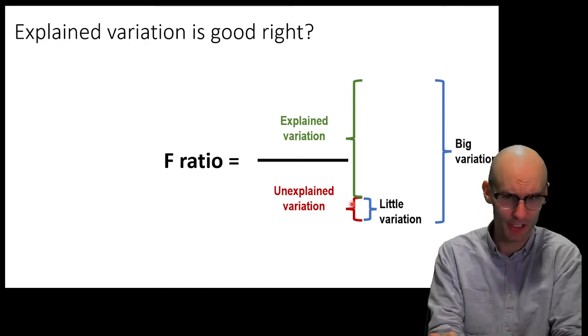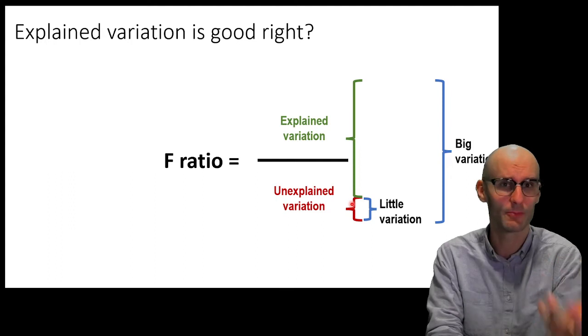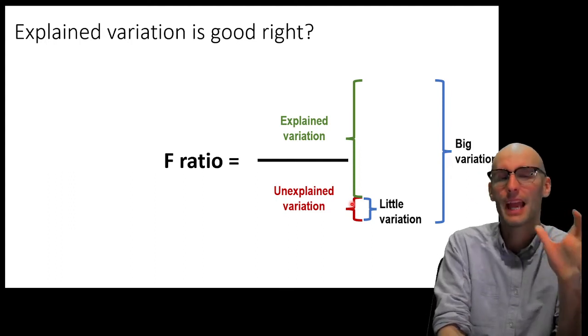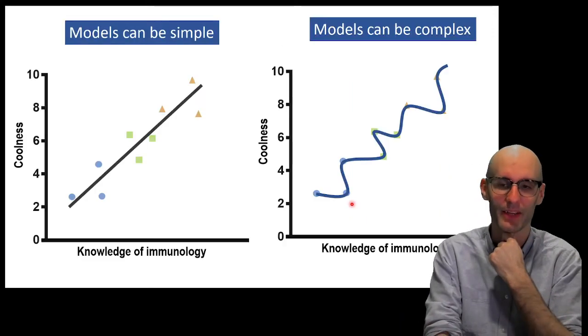And so, when we run our F-ratio, we get a nice big F-ratio. So, we get a nice small P-value. So, that's how we run stats tests. And that's how we should think about statistical models. Explained versus unexplained variation.